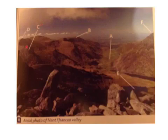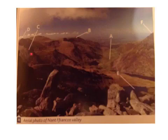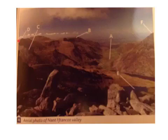Looking at C — it's a sharp ridge, with a Corrie on either side, so it's a thin ridge separating two Corries; that is obviously an arete. For D, you've got aretes coming up from multiple directions, therefore D is probably a pyramidal peak.